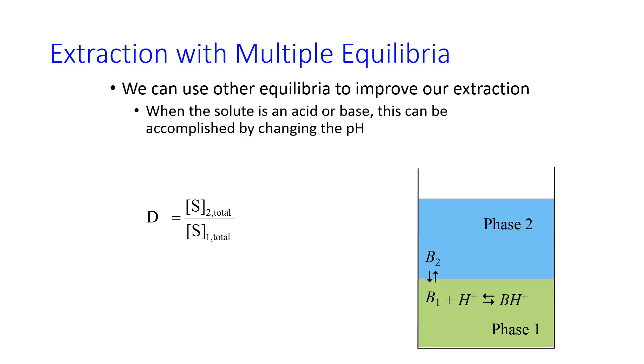We call the partition coefficient something a little different in this case. We call it the distribution coefficient. And you can sort of think of this in terms of the formal concentrations that we talked about earlier in the semester. Now, we're not only worried about the concentration of analyte in each phase, B1 and B2. We're worried about the concentration of the analyte in all its forms.